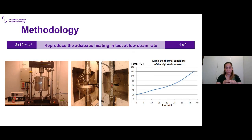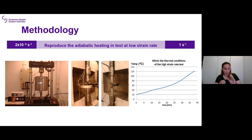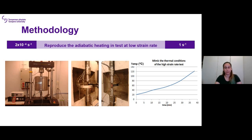To decouple the individual effect of adiabatic heating, some specimens were heated at a low strain rate in a controlled manner to reproduce the thermal conditions due to adiabatic heating. This means the specimen was heated at the same rate at which it would heat up in a high-rate test under adiabatic conditions. With this procedure, a test at low strain rate can have microscopically similar thermal conditions as a test at high strain rate.